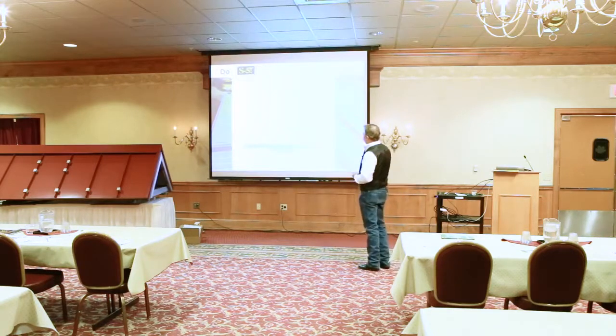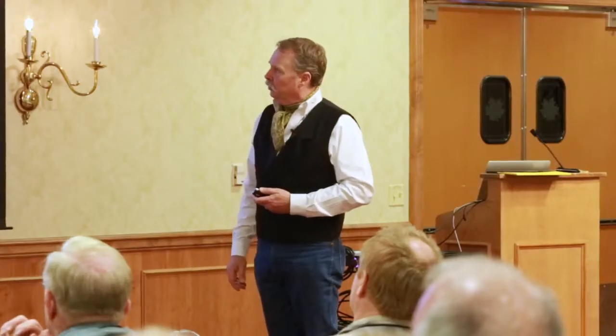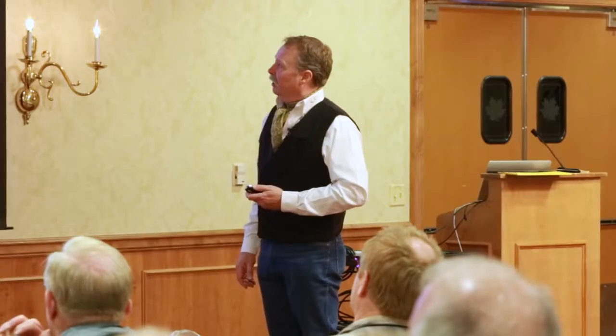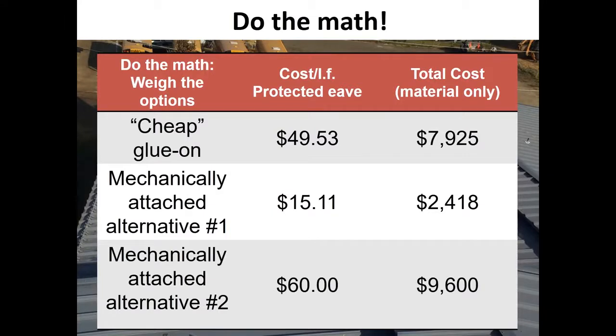Now we'll look at an S5 calculation on the same job: two rows of assembly with a clamp on every seam — one, two, done. Remember what the other one was? $50 per linear foot. This one is $15. We're not even talking labor here — just the cost of materials. Think about the labor of putting 24 of those parts on. Do the math, then make the buying decision. In most cases you can buy the best for a fraction of what you're paying for the inferior product.